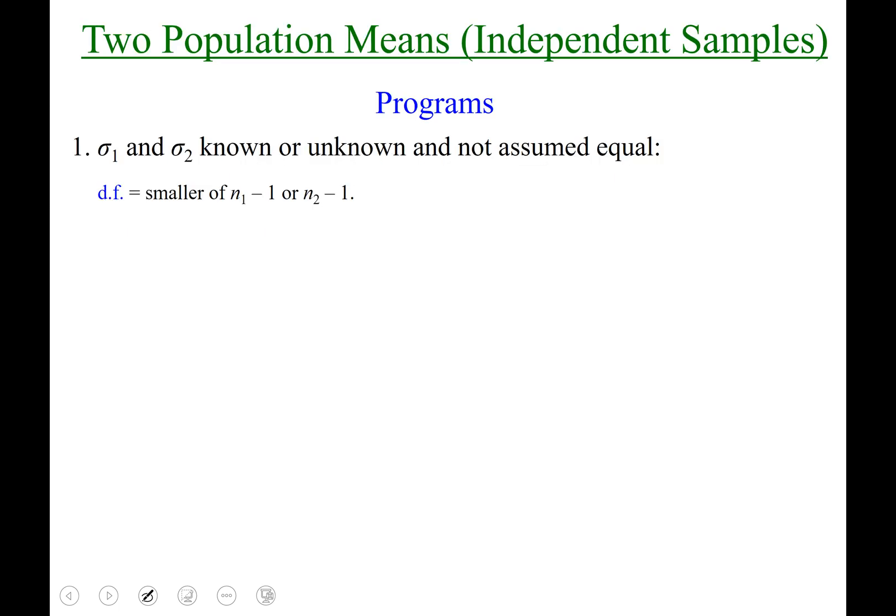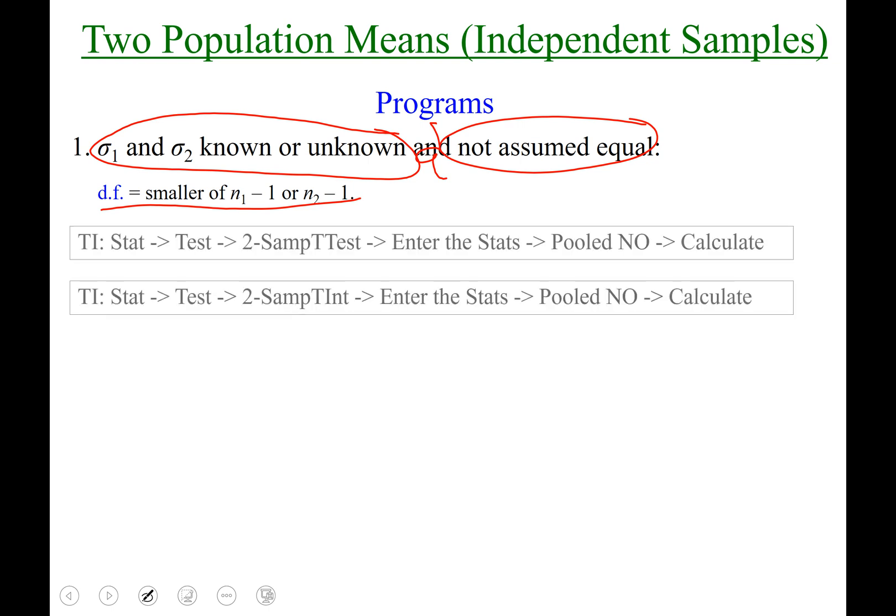Two population means independent samples. The first program will be used if σ₁ and σ₂ are known or unknown, but it's the and - they are not assumed to be equal. If that is the case, then our degrees of freedom will be the smaller of whichever sample size minus one is smaller.